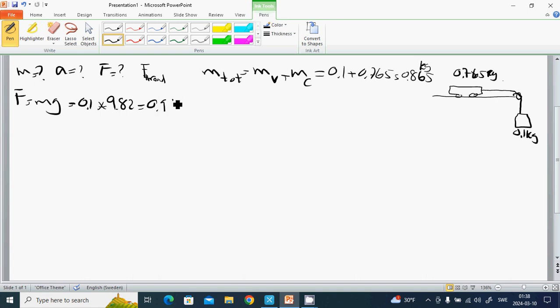It is 0.982 newtons. Because the motion is due to this mass. And the F is the M tooth multiplied by a. Then a equals 0.982 divided by 0.865. It is almost 1.1 meters per second squared.